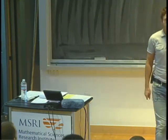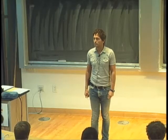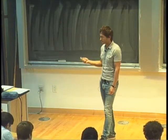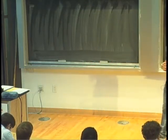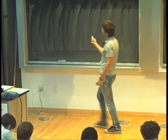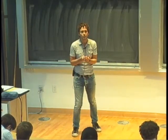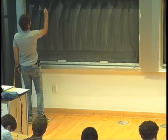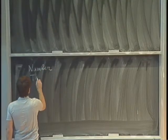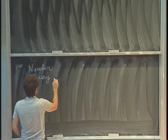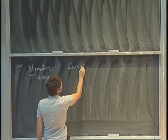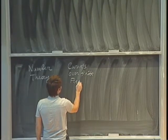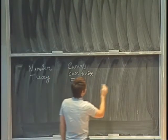Today I will continue and talk about the connection between the Langlands program and DHTA. Let me remind you what we discussed last time. I talked about the André Weil point of view, where you have three different columns, three different tracks: number theory, curves over finite fields, and Riemann surfaces.